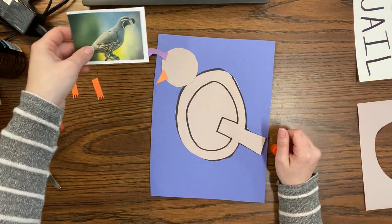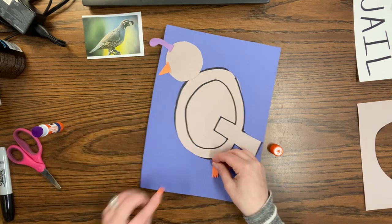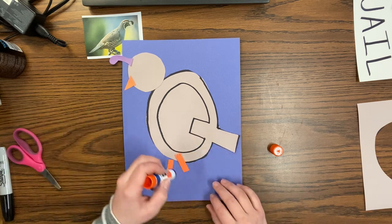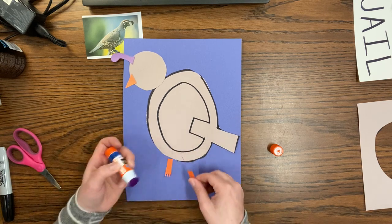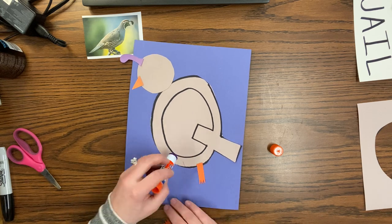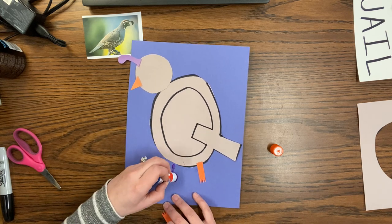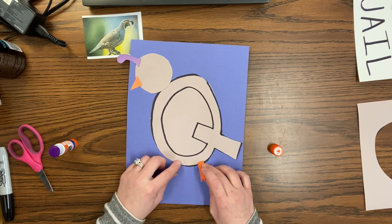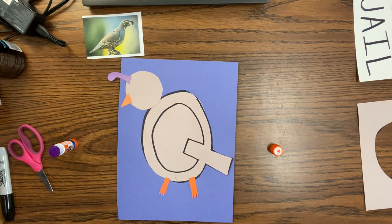Then the last thing we need is his feet. See? This is his feet. So I'm going to glue on his feet. I'm going to put a line of glue on my paper and then just stick the foot on because that's easier for me.